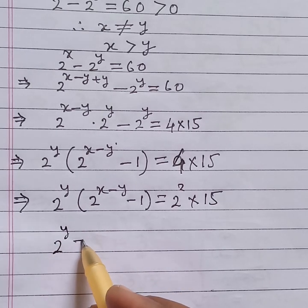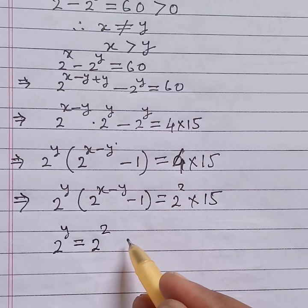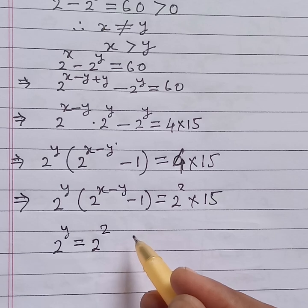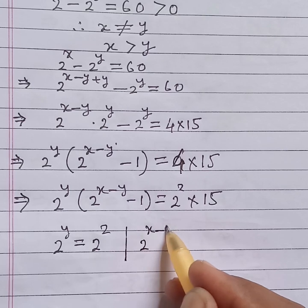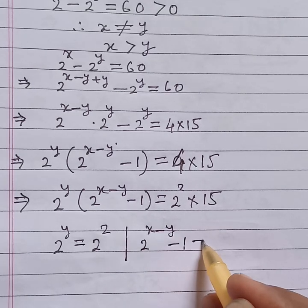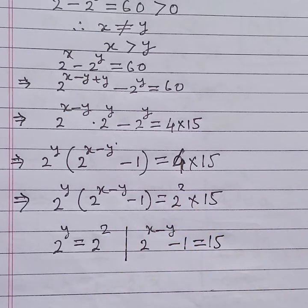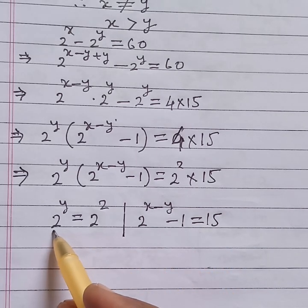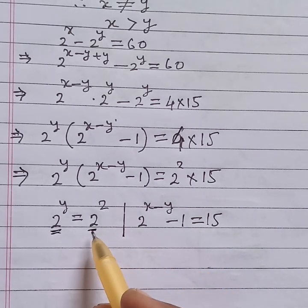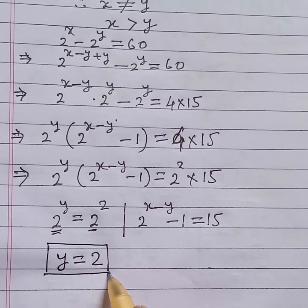We can say 2 to the power y is equal to 2 squared, or 2 to the power (x minus y) minus 1 is equal to 15. So, 2 to the power x minus y minus 1 is equal to 15, plus 2, is equal to 4. Now, both sides the base is equal. Therefore, y is equal to 2. So, we get the value of y is 2.